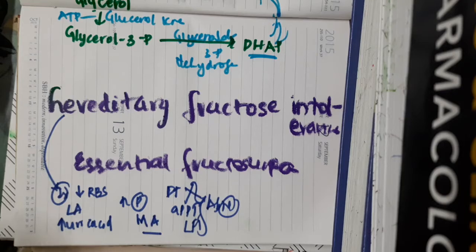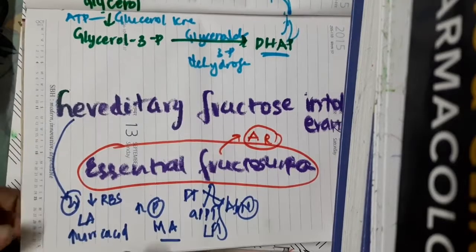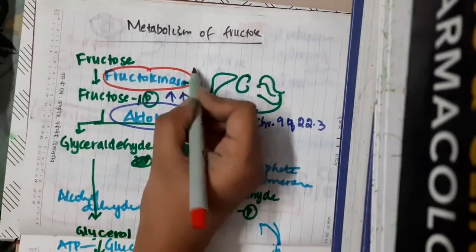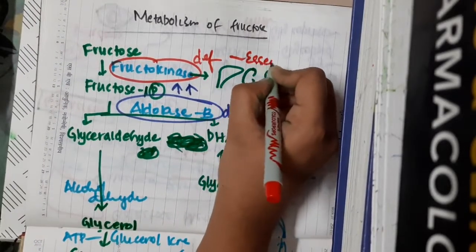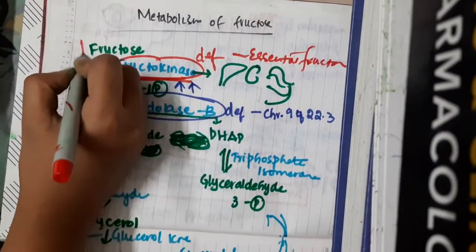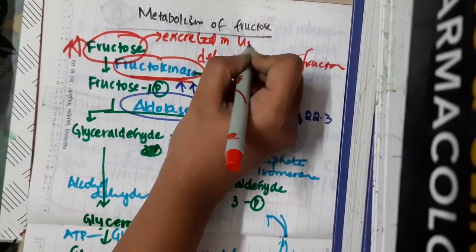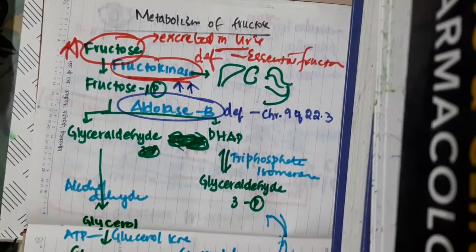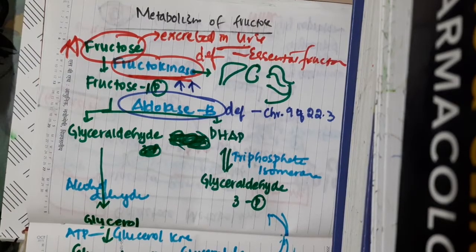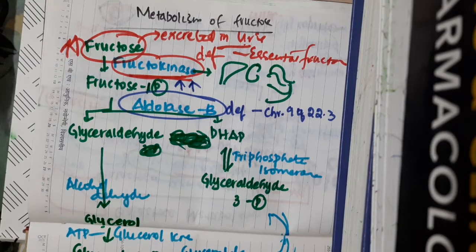The second disorder is essential fructosuria, which is an autosomal recessive, benign condition occurring due to deficiency of fructokinase. Because of this deficiency, fructose is not metabolized and is instead excreted in the urine. Fructose levels in the urine can be detected, and urine chromatography can be performed for diagnosis.